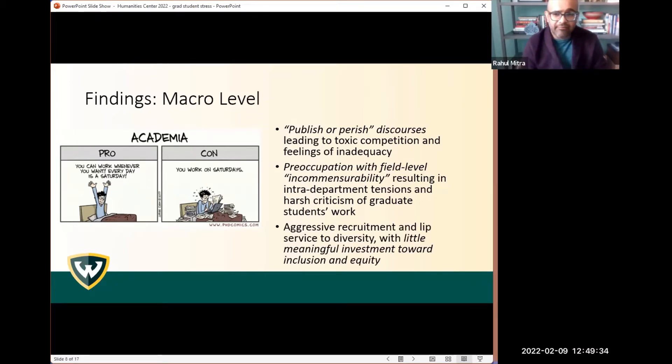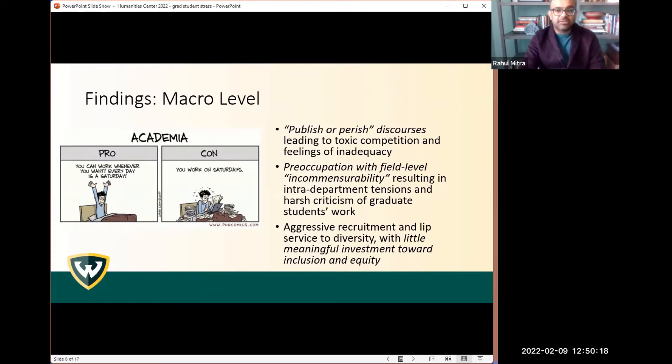The last major theme from the macro level was really recognizing that although a lot of departments and universities paid lip service to diversity and aggressively recruited students of color, unfortunately, on the ground, there was little meaningful investment in terms of training or even just acknowledgement of diverse experiences and how diverse experiences would translate into different forms and expectations of scholarship. And so the little meaningful investment really meant that a lot of graduate students felt really alienated within these departments that initially they had such high hopes for.